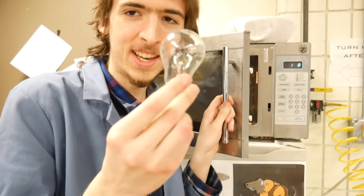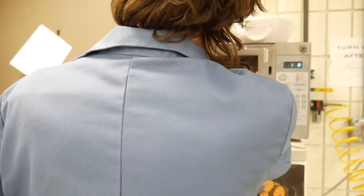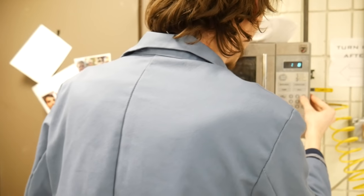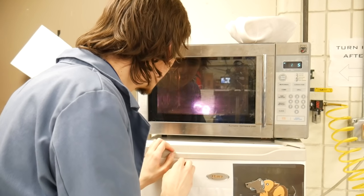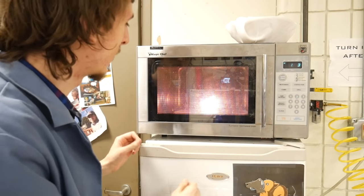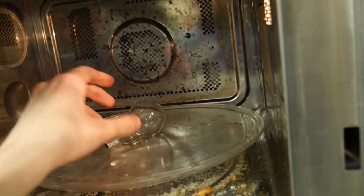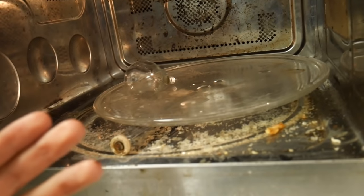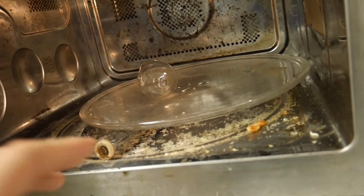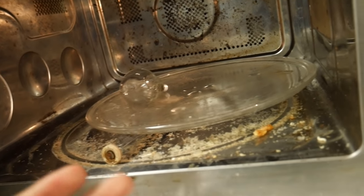Now let's see what an incandescent bulb does in a microwave. Oh, it lights up well. Unlike a fluorescent light, it won't glow in the visible spectrum, however, the noble gases inside of it will cause a plasma to flow between the filament and the outside glass.